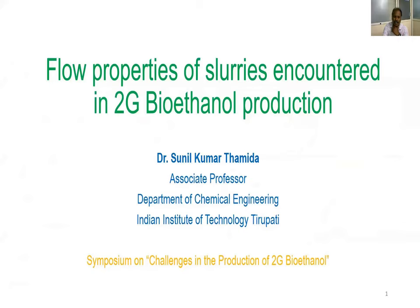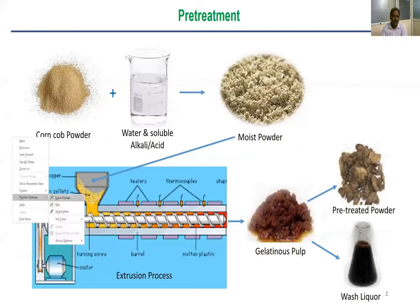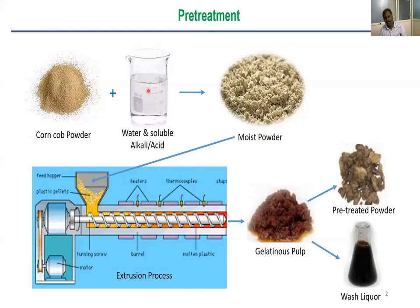The topic of this talk is about slurries encountered in 2G bioethanol production. We start with the powder and mix it with water — water is the universal solvent. One can work with supercritical fluids and so on, but the best thing to work with is water and some soluble alkali or acid.